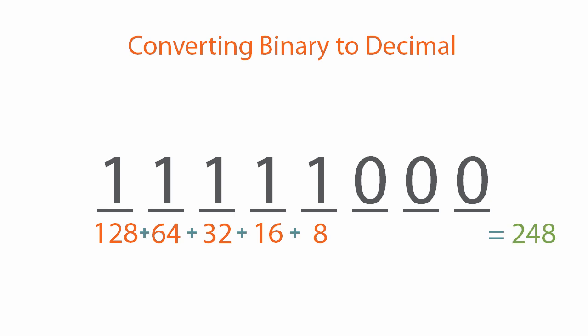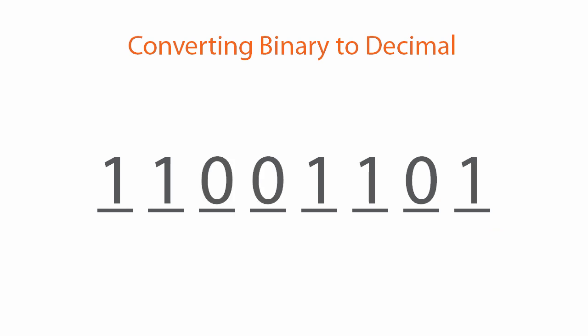128 + 64 + 32 + 16 + 8 = 248. Notice I only wrote out the place values I actually added. As you get more practice, you won't even need to write them out — you'll just remember them. Let's try one more: 1 1 0 0 1 1 0 1. Write down all the place values where the bit is set to 1 and add them together. The answer is 205 decimal.